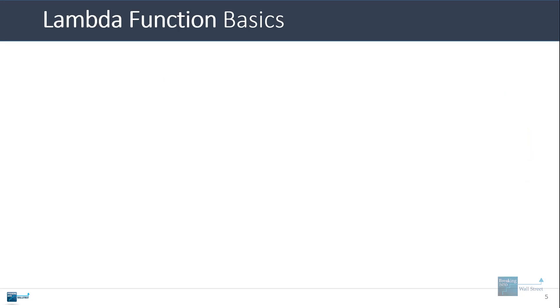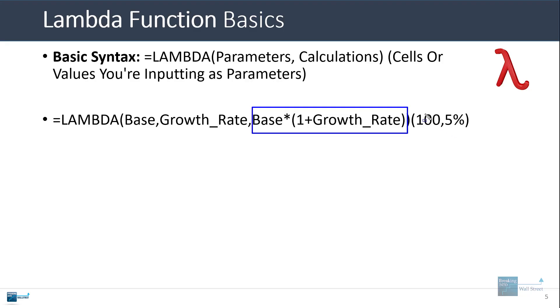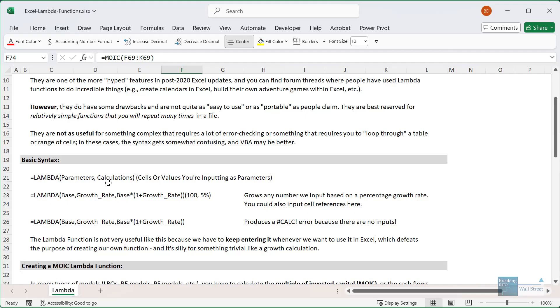In terms of the basic syntax here, you want to enter Lambda and then the parameters, the calculations in parentheses, and then you want to enter the cells or values that you're inputting as parameters to this Lambda function. For example, if we want to enter something that takes a number and then multiplies by one plus the growth rate to grow it at a specific rate, we can enter it like this. I'll go into Excel now and show you an example of this.